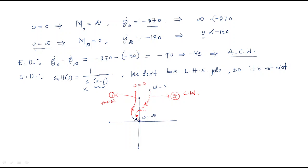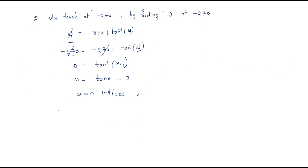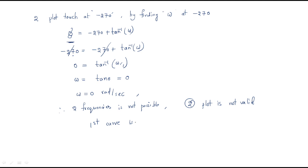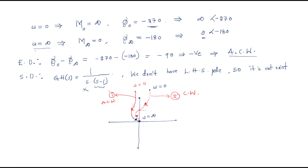When the curve touches the imaginary axis at the -270° angle, it shows frequency ω = 0. But we are already starting from ω = 0 — having two occurrences of ω = 0 is not possible. Therefore the second plot is not valid. The first curve is the correct one, meaning the polar plot travels in the anticlockwise direction.